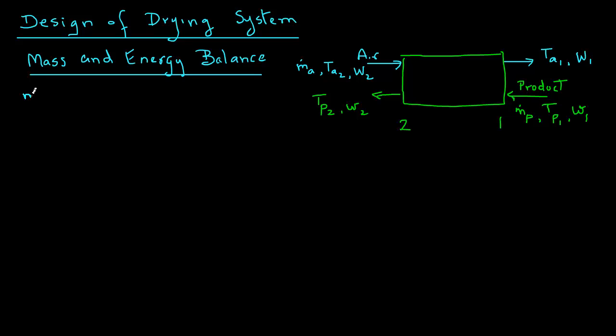Let me just write down the various symbols that we are using. m_a is the air flow rate, which is kilograms of dry air per hour. m_p is the product flow rate, expressed as kilograms of dry solids per hour.